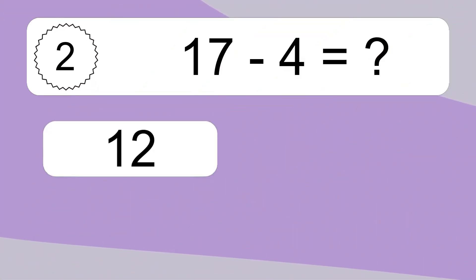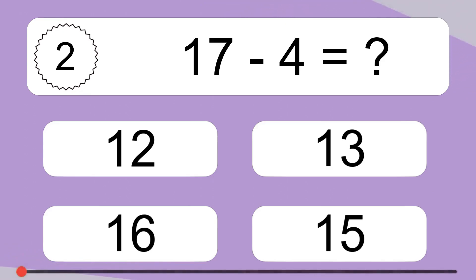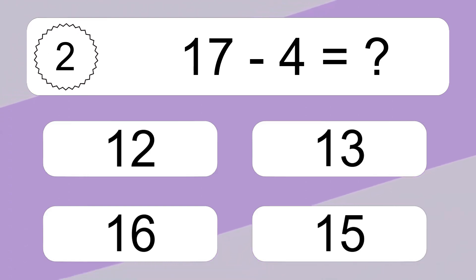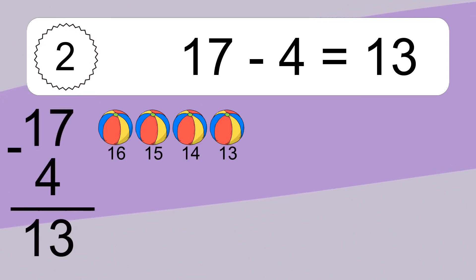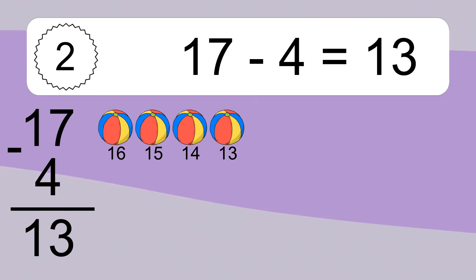17 minus 4 equals what? 17 minus 4 equals 13. Let's count it: 16, 15, 14, 13.